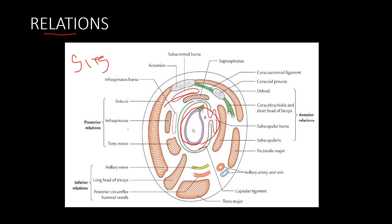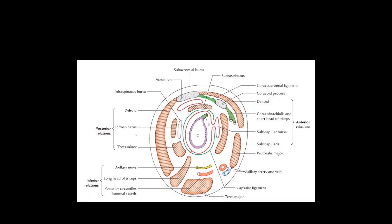Regarding the relations of the shoulder joint: the rotator cuff muscles are important. Superiorly is the supraspinatus. Posteriorly are the infraspinatus and teres minor. Anteriorly is the subscapularis. Superiorly, the coracoacromial arch is present — it is the subacromial region. The major deltoid muscle covers the joint posteriorly and anteriorly.